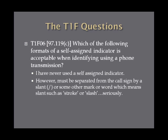Which of the following formats of a self-assigned indicator is acceptable when identifying using a phone transmission? You must provide your call sign followed by or preceded by a slant — or a word meaning slant, such as 'stroke' or 'slash.' Sometimes in coordinated nets, you can assign yourself an indicator to describe your role, such as two letters like 'whiskey three' or 'Oscar tango.' It can come before or after your call sign, but must be separated by a slant, stroke, or slash.